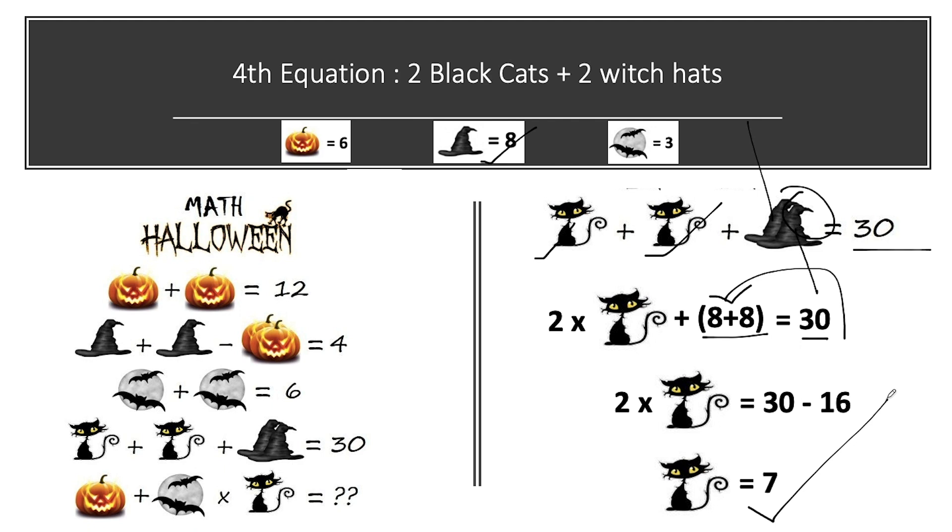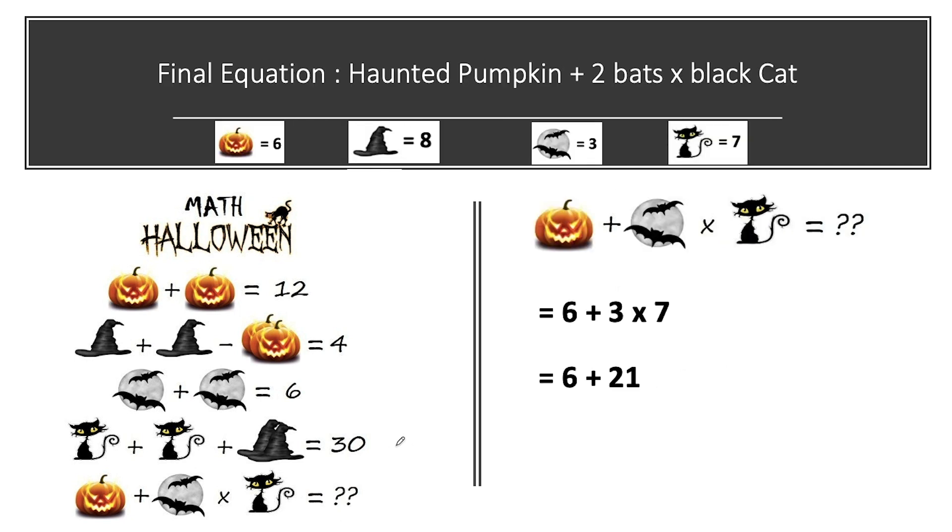Now we know each and every item's value present in our last equation. So solving our last equation. In the last equation we have 1 haunted pumpkin, 2 bats into 1 cat. We know value of pumpkin that is equal to 6, putting that here in this equation. Plus we know value of 2 bats that is equal to 3, putting that here, into 1 cat that is equal to 7.